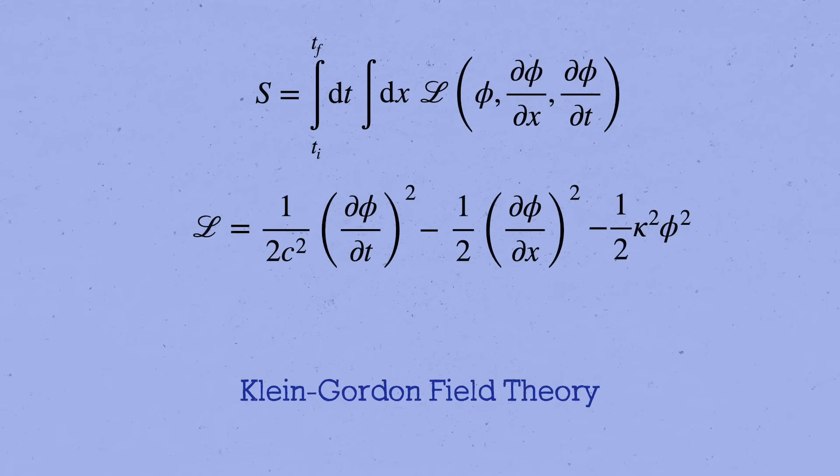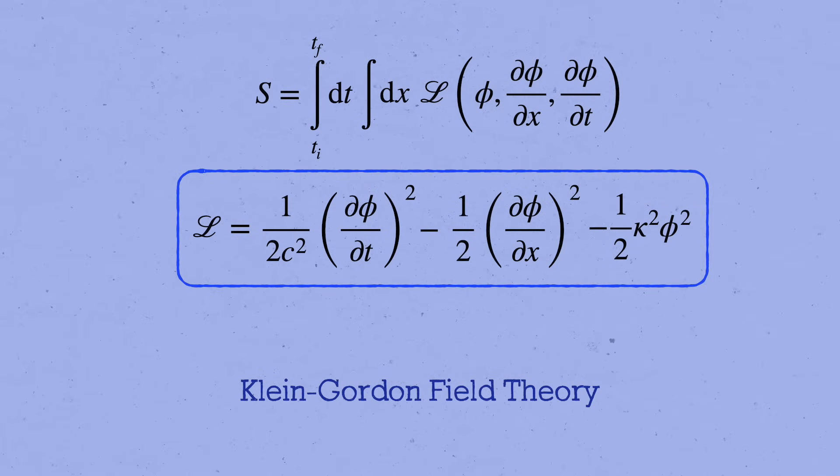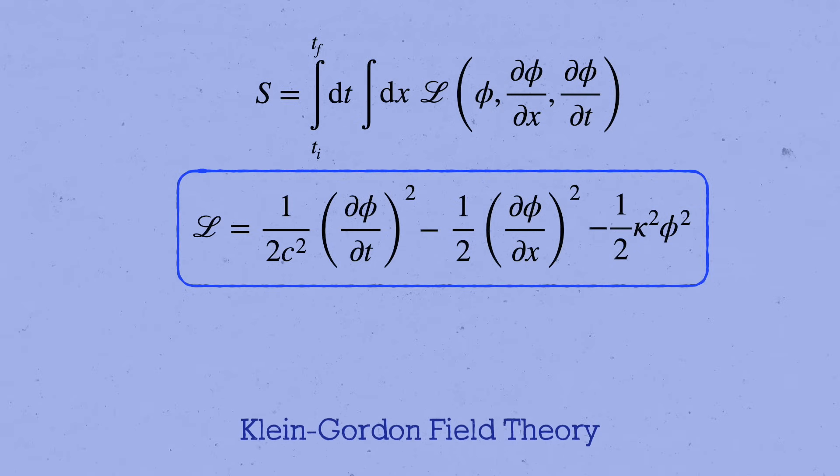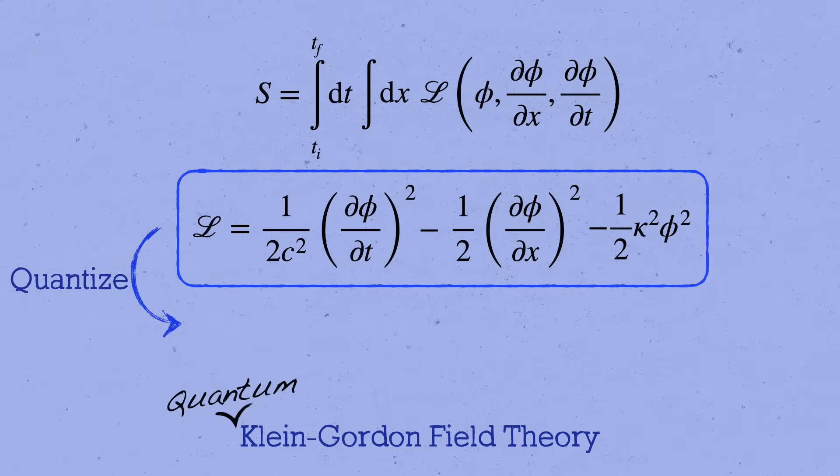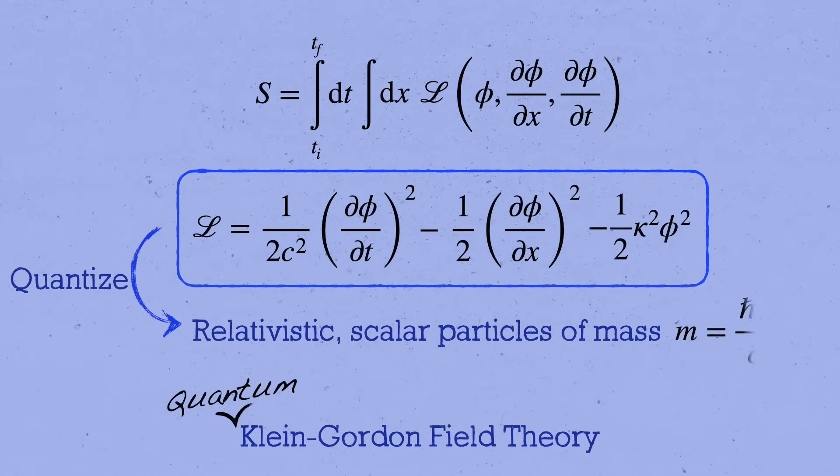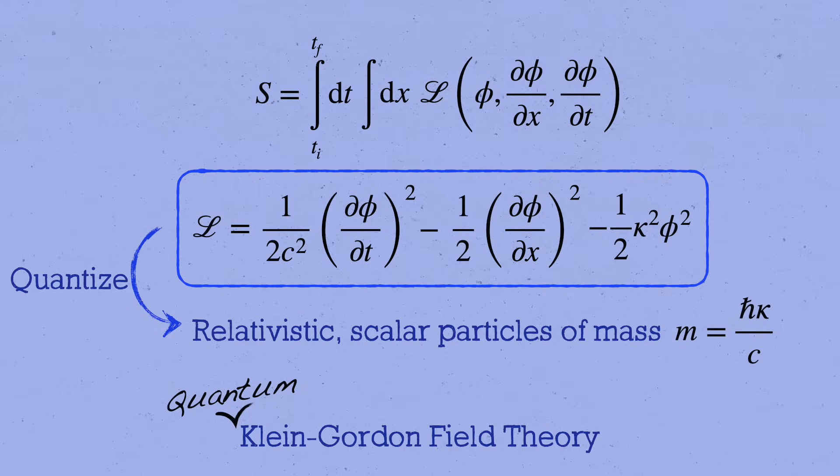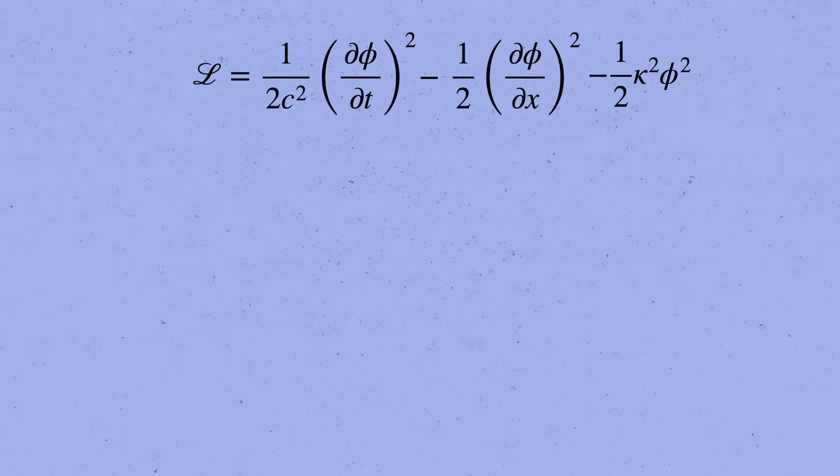The minus signs are there for the same reason that l equals k minus u in regular old particle mechanics. If we flip them around to plus signs, we'll get the total energy density. Again, this Lagrangian defines the Klein-Gordon field theory, and when we quantize it to make a quantum field theory, it describes the relativistic quantum physics of free scalar particles of mass m equals h-bar kappa over c. We'll see where that mass comes from in a minute, but let's continue to work out the classical theory. All we've really done so far is define it.